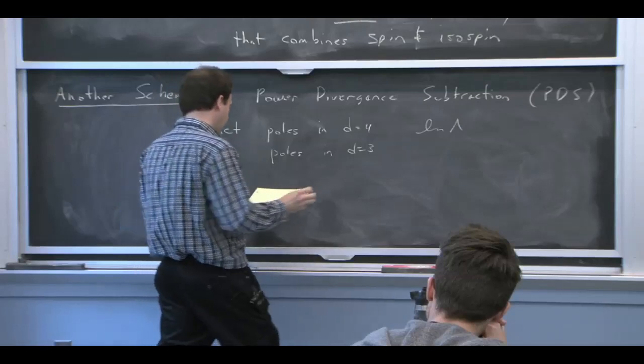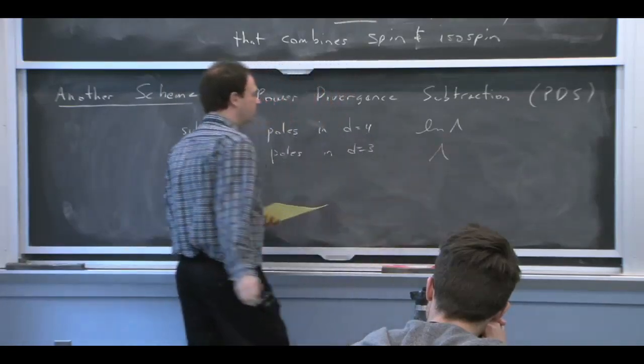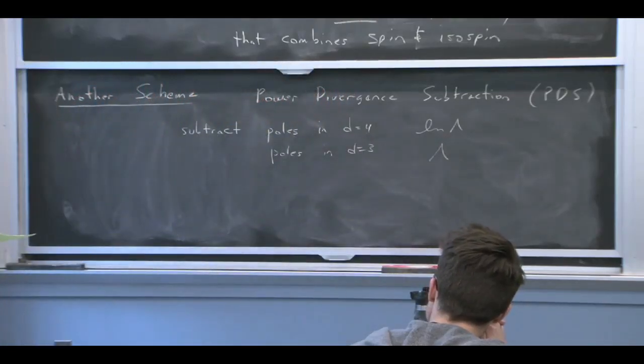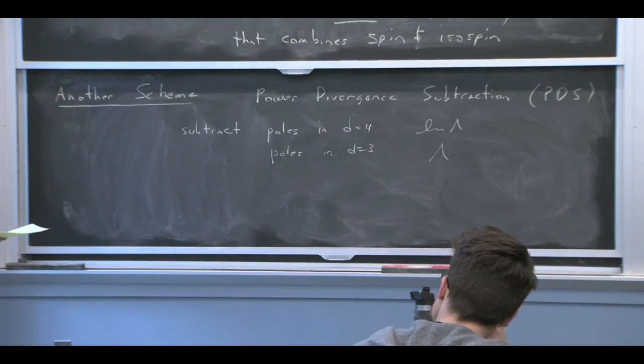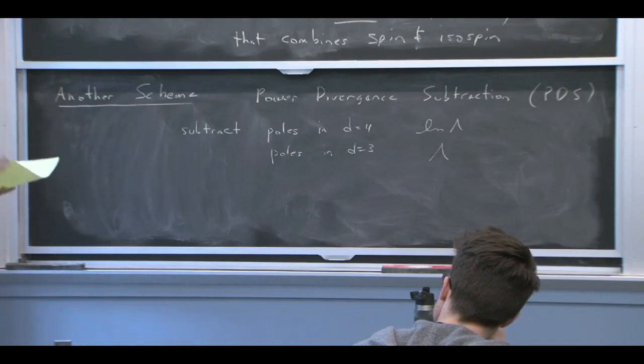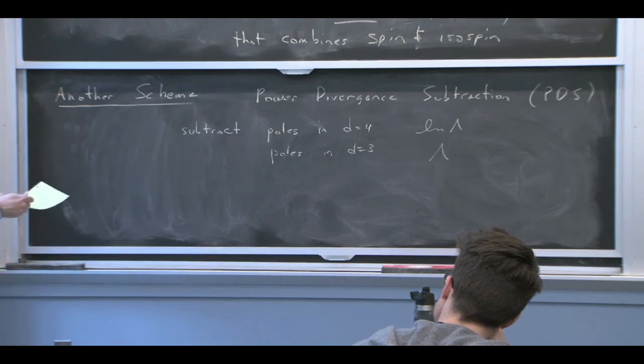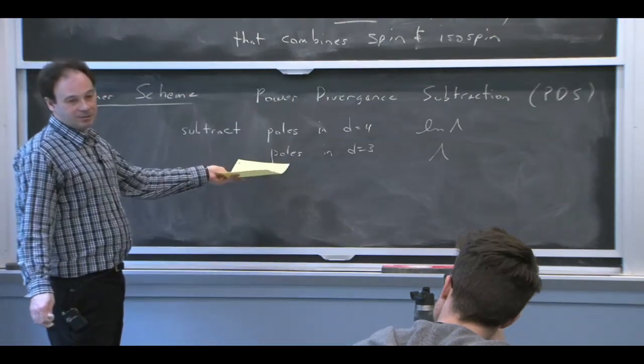And dimreg knows about power law divergences, and they're just poles at different places in the dimensions. And so if we subtract poles at d equals 3, we can track the power law divergences in that way. And it's the power law divergence that's actually causing, if you want to think of it as a change to the anomalous dimension, where the anomalous dimension was saying this thing was irrelevant to changing it to something relevant. You need a big change for that to happen, and the big change that's occurring is coming from a power law divergence here.